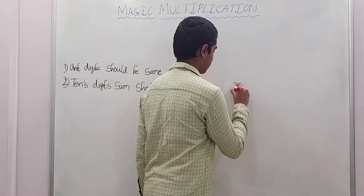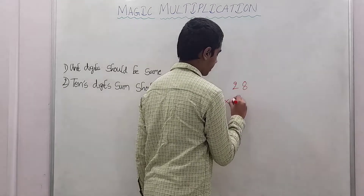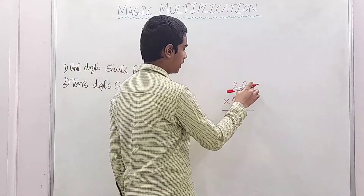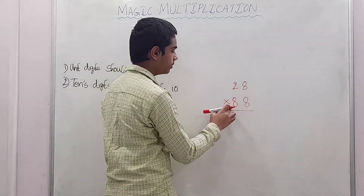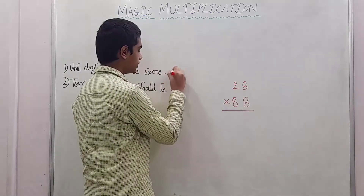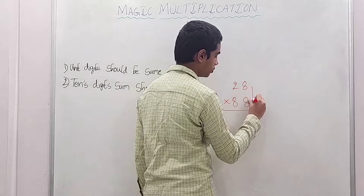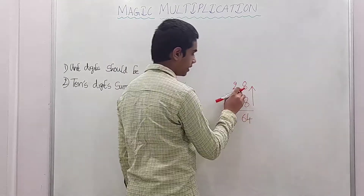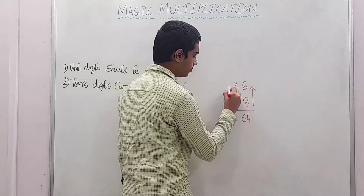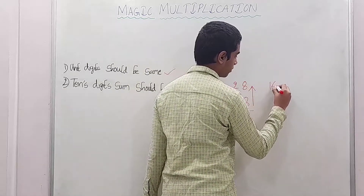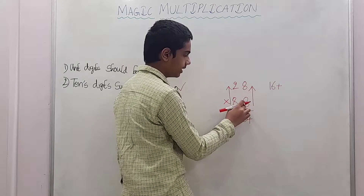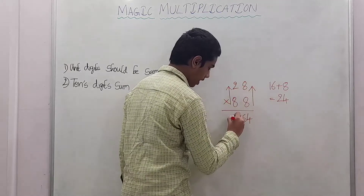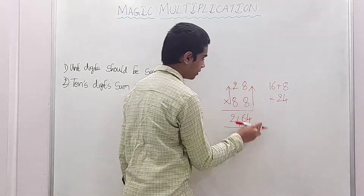Let's take another example: 28 into 88. First rule, unit digits should be same: 8 and 8 — satisfied. Second rule, 10th place digits sum should be 10: 8 plus 2 equals 10 — satisfied. First step: multiply unit place digit numbers — 8 into 8 is 64. Next step: multiply 10th place digit numbers — 8 into 2 is 16, plus unit place digit down number 8: 16 plus 8 is 24. So write 24. The final answer: 28 into 88 is 2464.